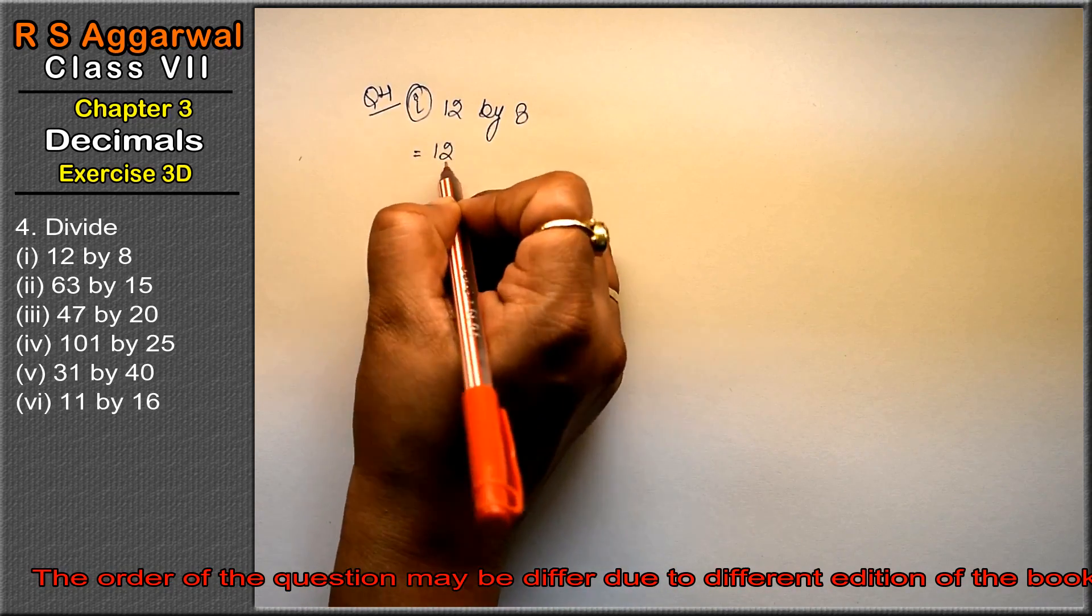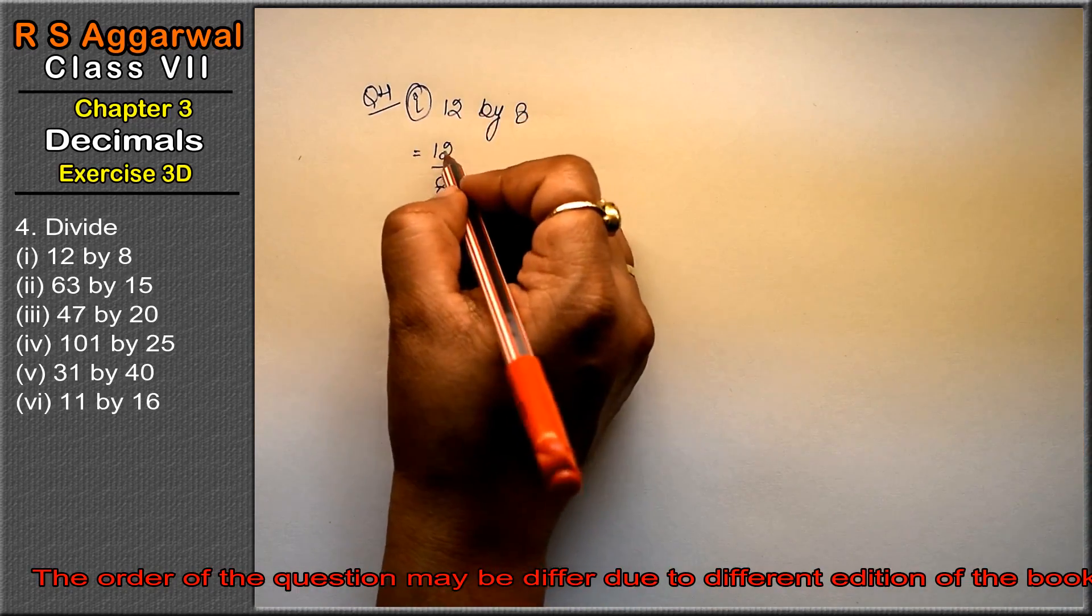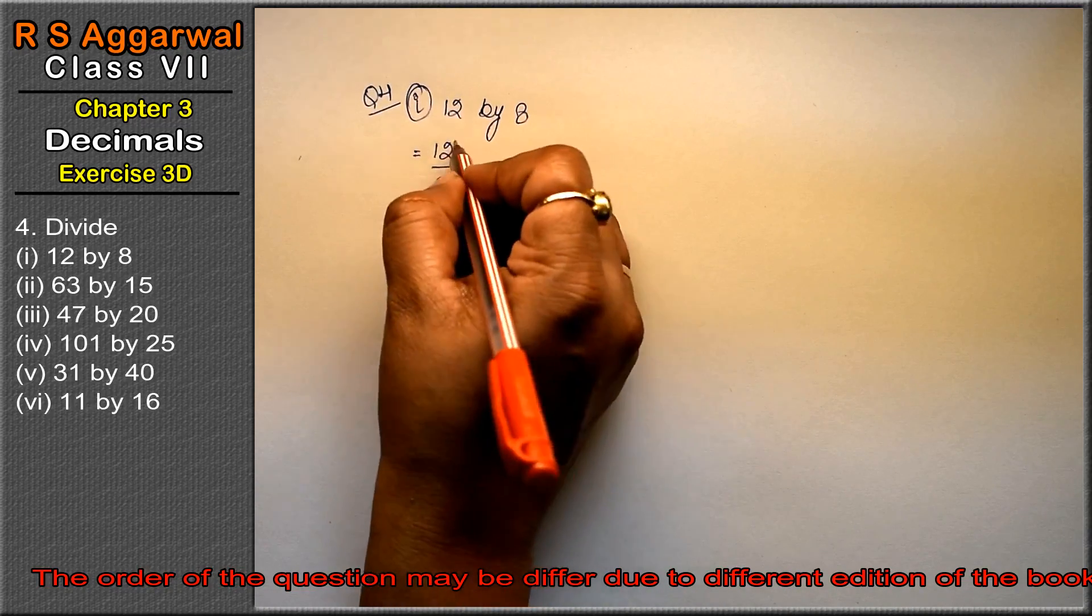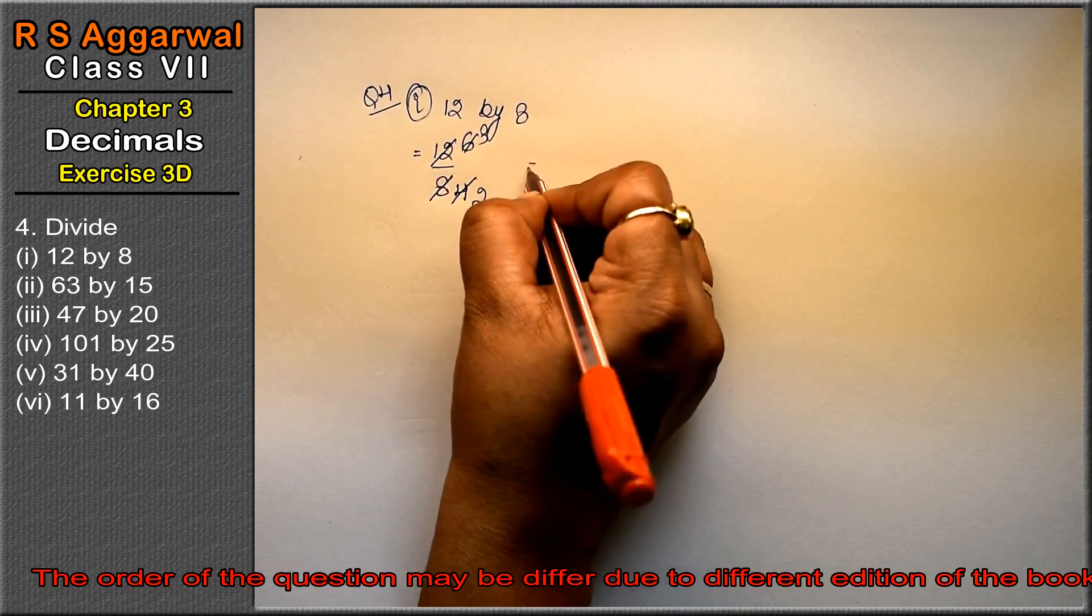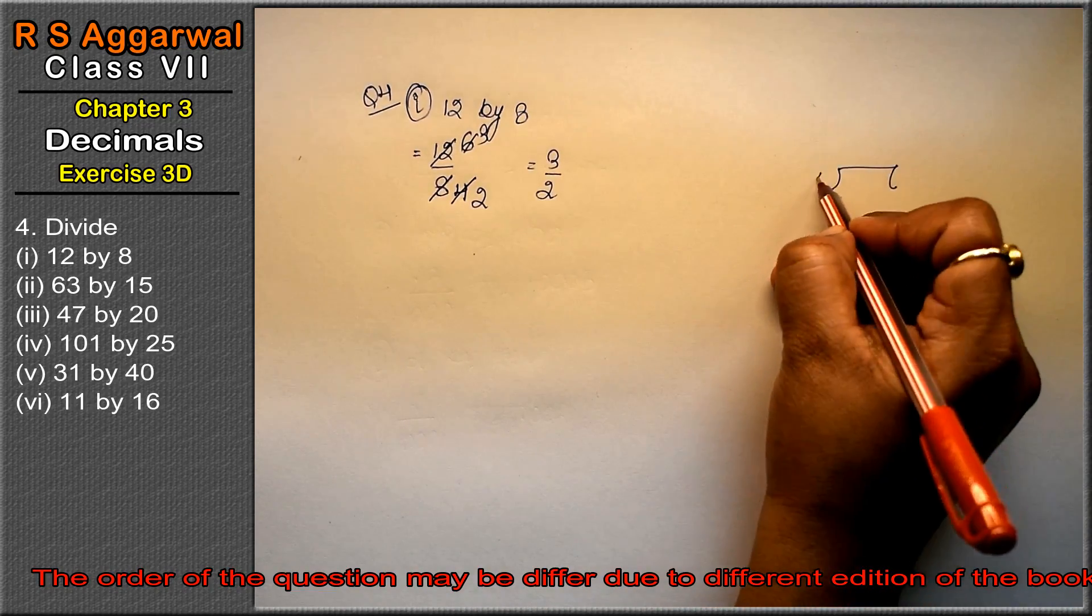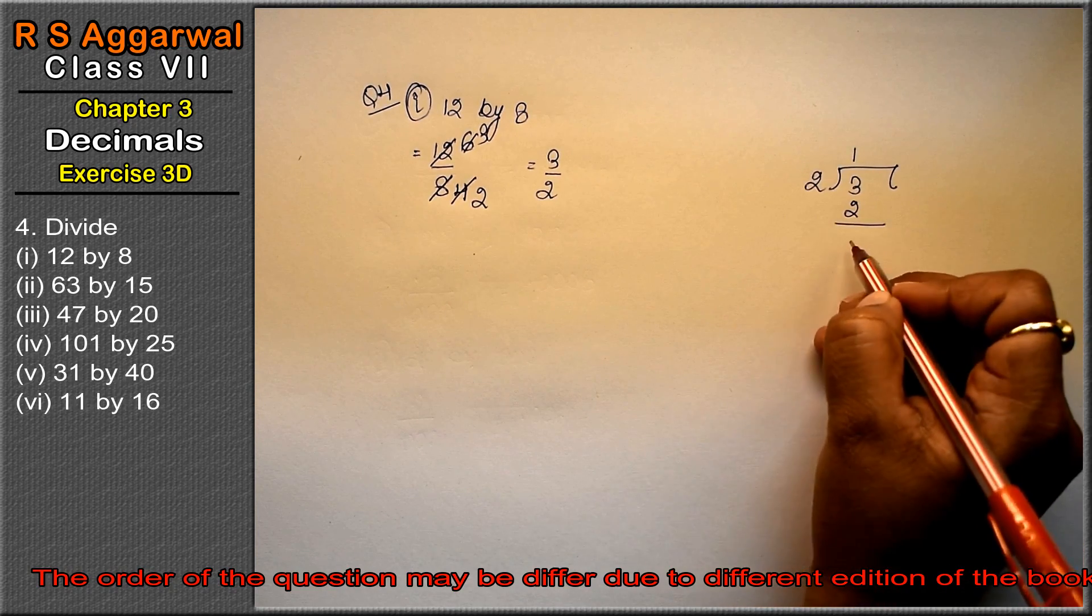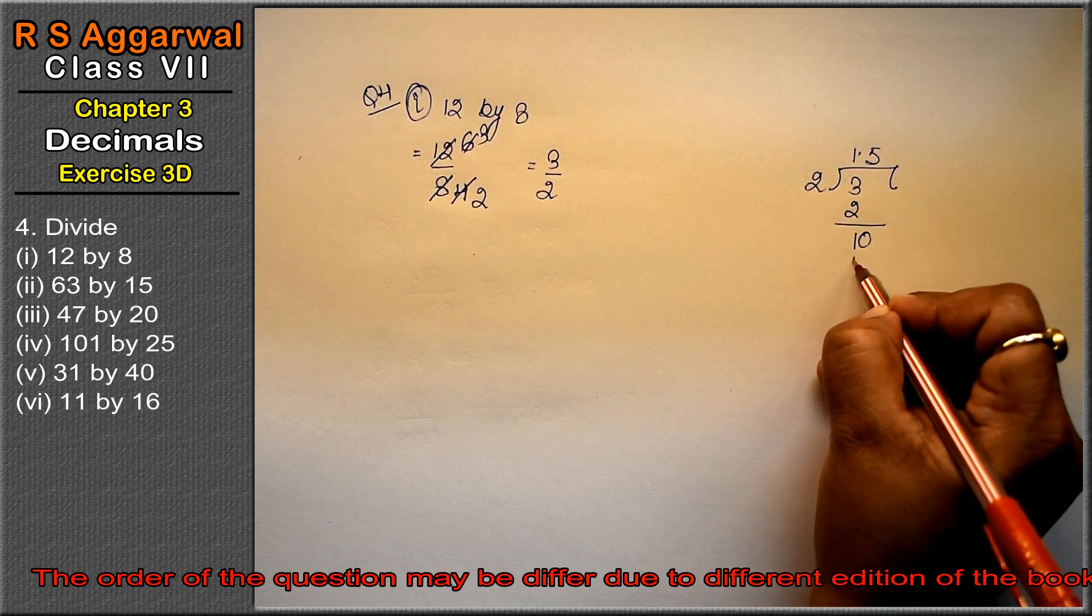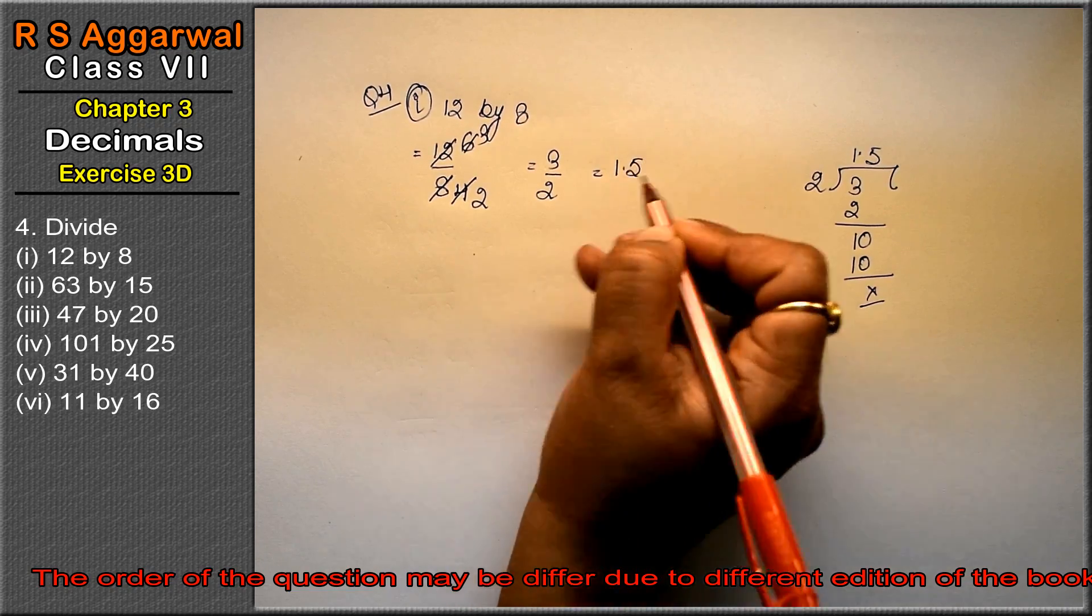Friends, 12 divided by 8. You can divide directly or simplify first. We can factor: 2×4 is 8, 2×6 is 12, so this becomes 3 divided by 2. Now dividing: 2 goes into 3 one time, with 1 left. Adding decimal point and zero: 2 goes into 10 five times. That means 1.5 is the answer.